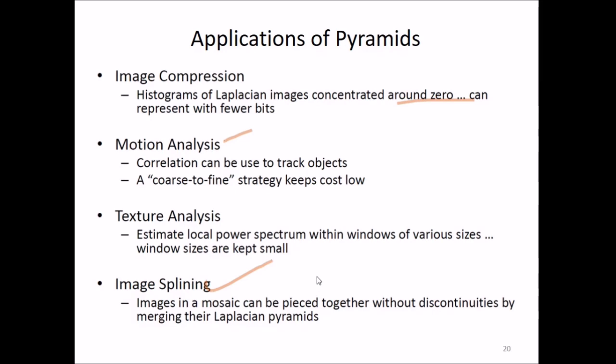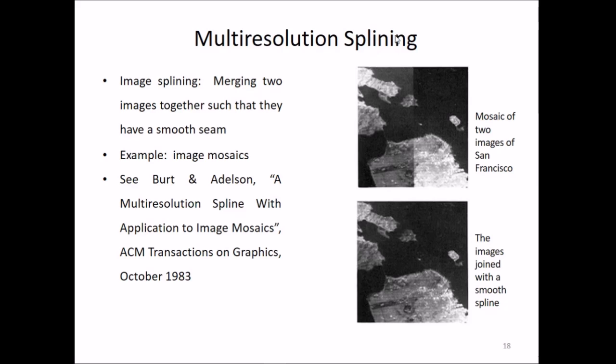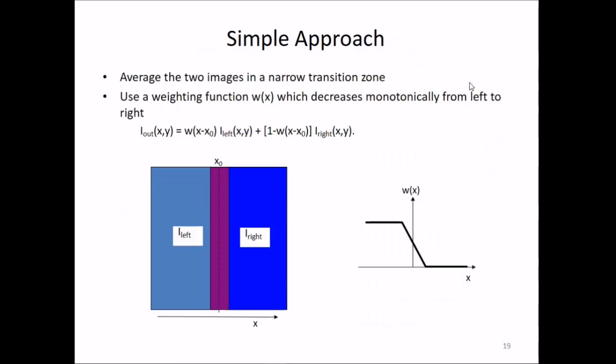Images in a mosaic can be pieced together without discontinuities by merging the Laplacian pyramids of images. This is multi-resolution splining. If we mosaic two images, there will be a line where they join. Image splining merges two images together such that they have a smooth, seamless seam. A simpler approach is to average the two images in a narrow transition zone using a weighting function w(x) that decreases monotonically from left to right.